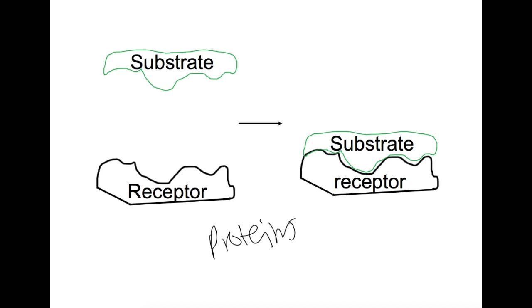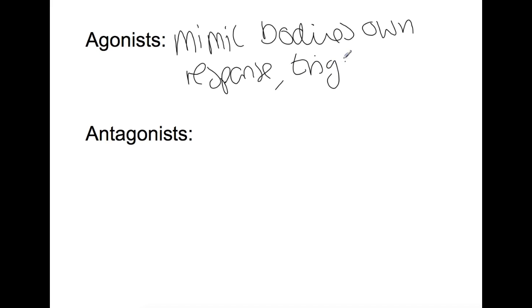We have two classes of drugs that we look at in advanced higher. The first are agonists, and these are drugs that mimic the body's own responses and they can trigger a response within the body. An example would be salbutamol, which is used for asthma, which mimics adrenaline but binds more strongly.